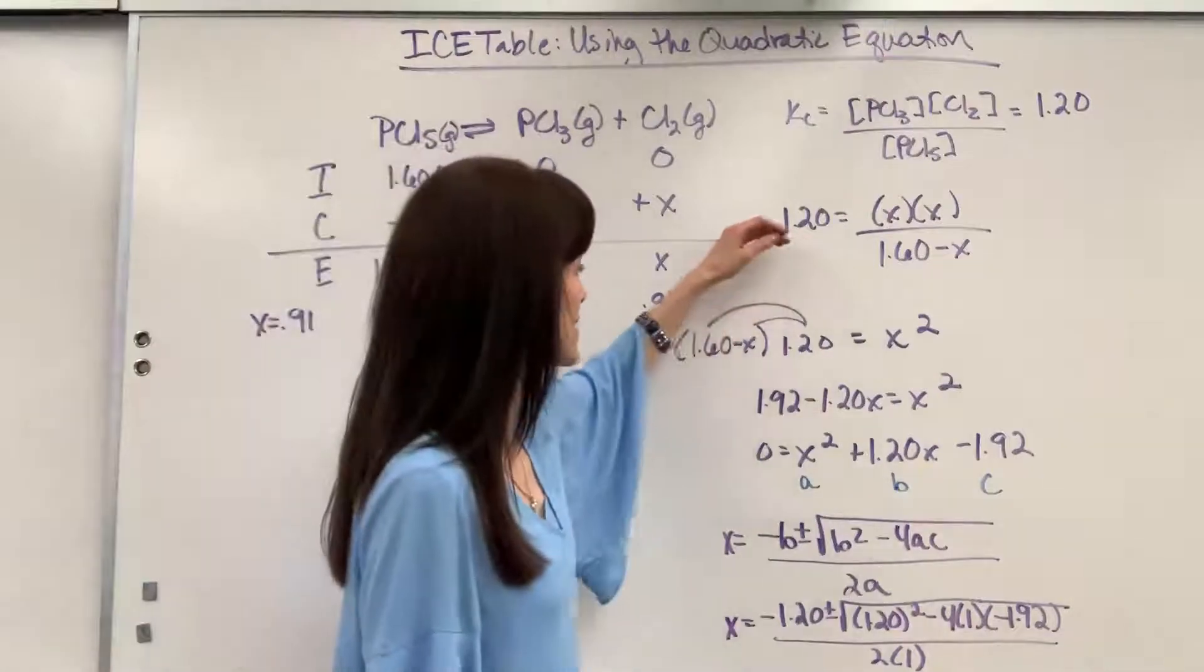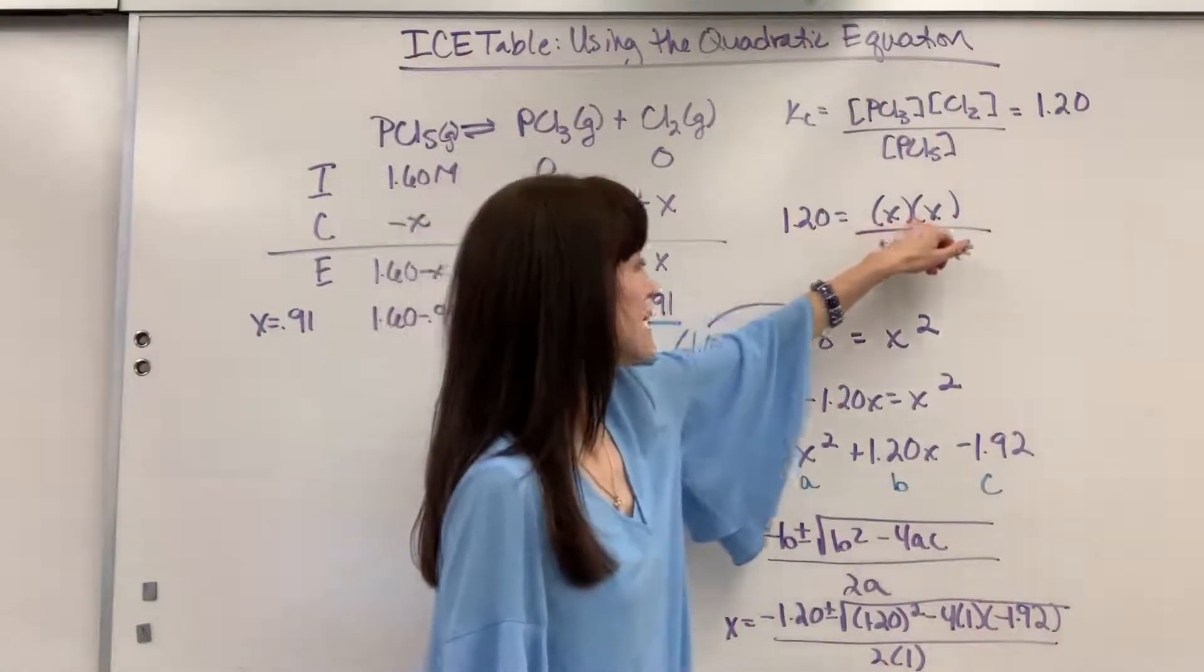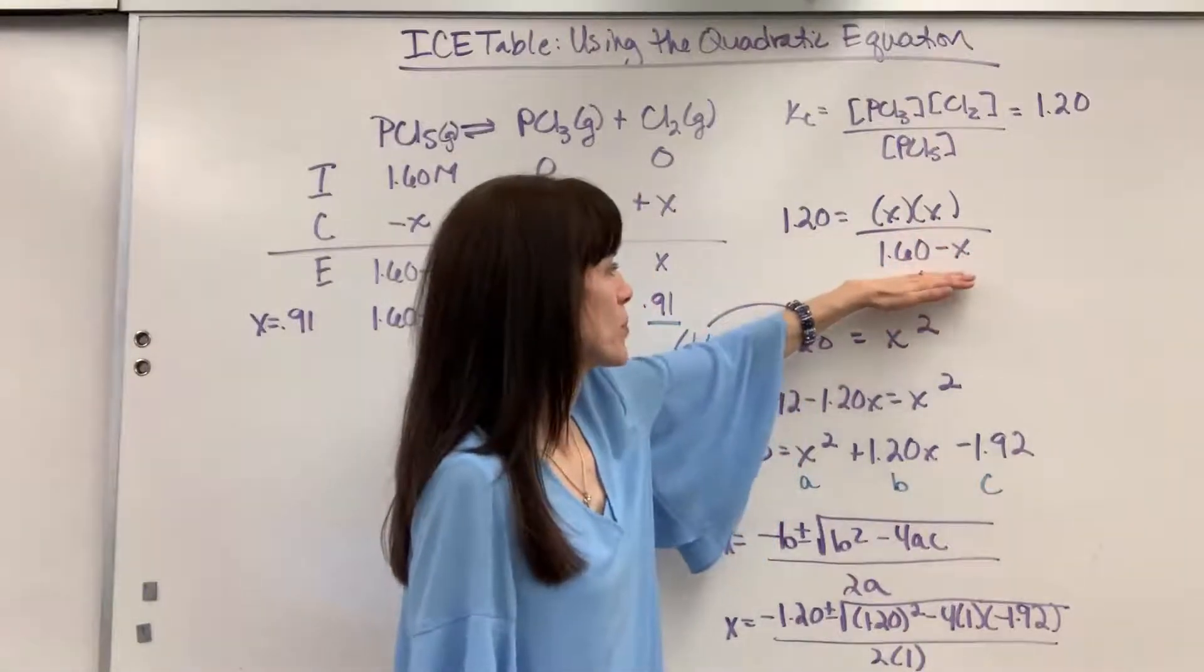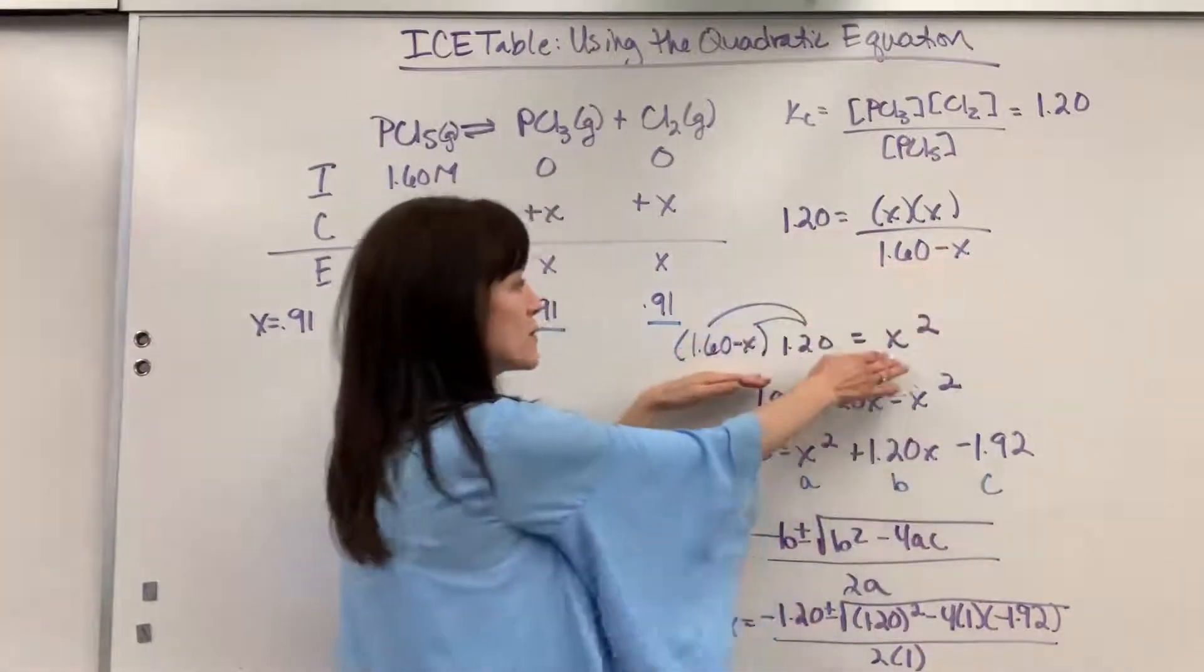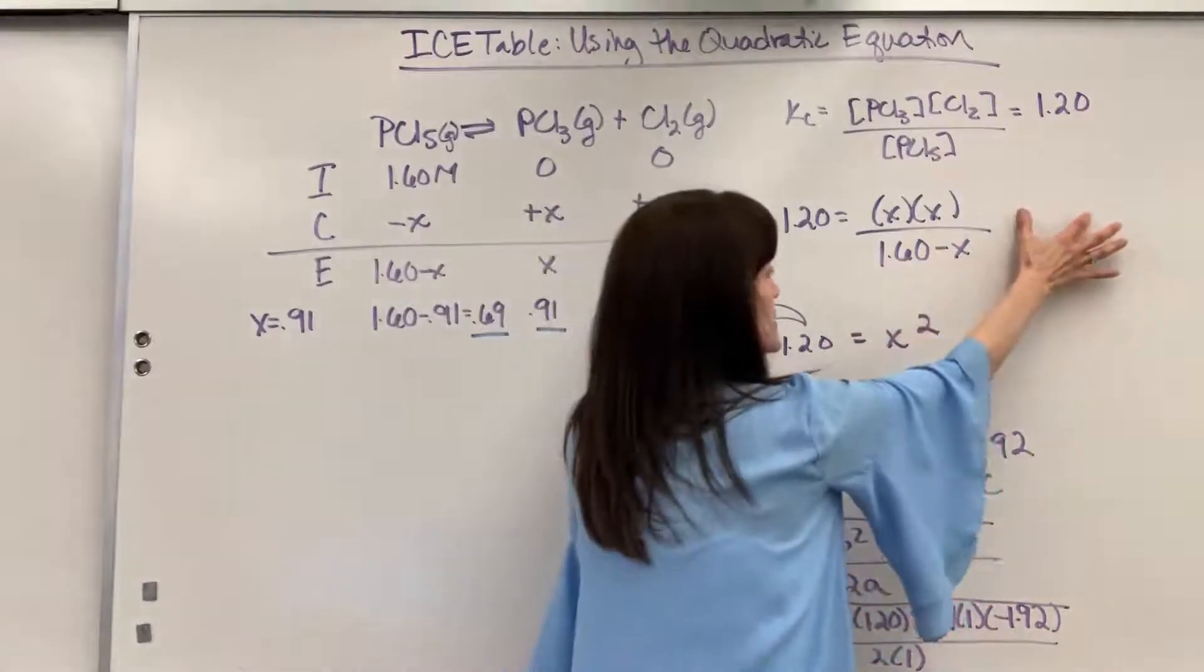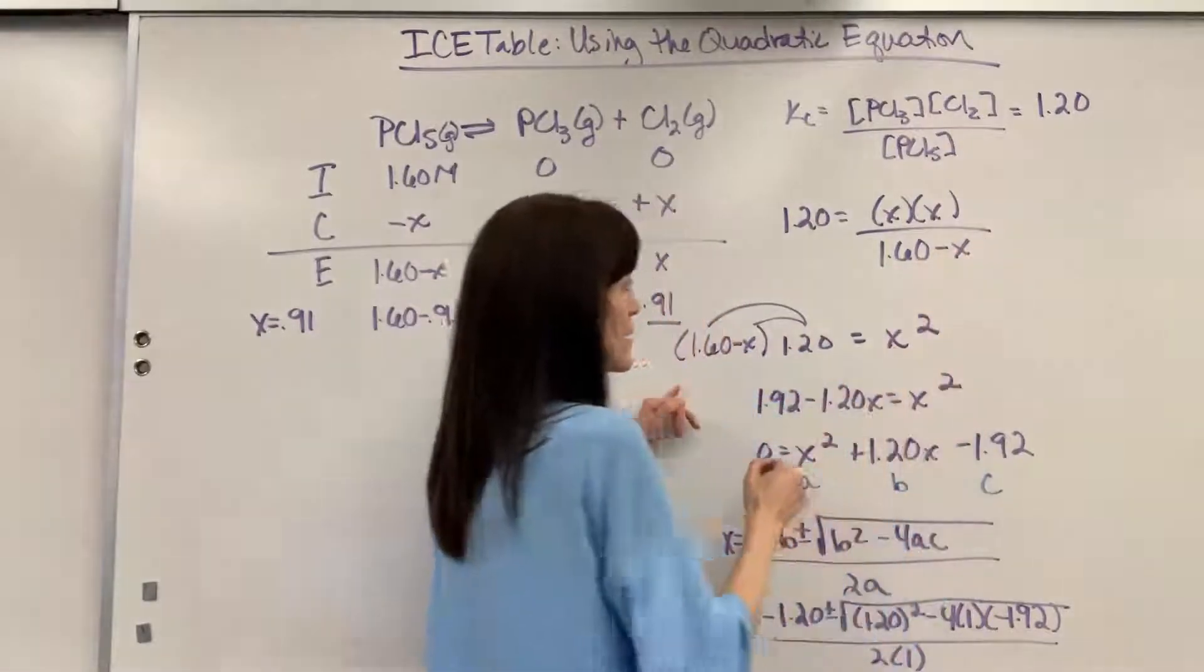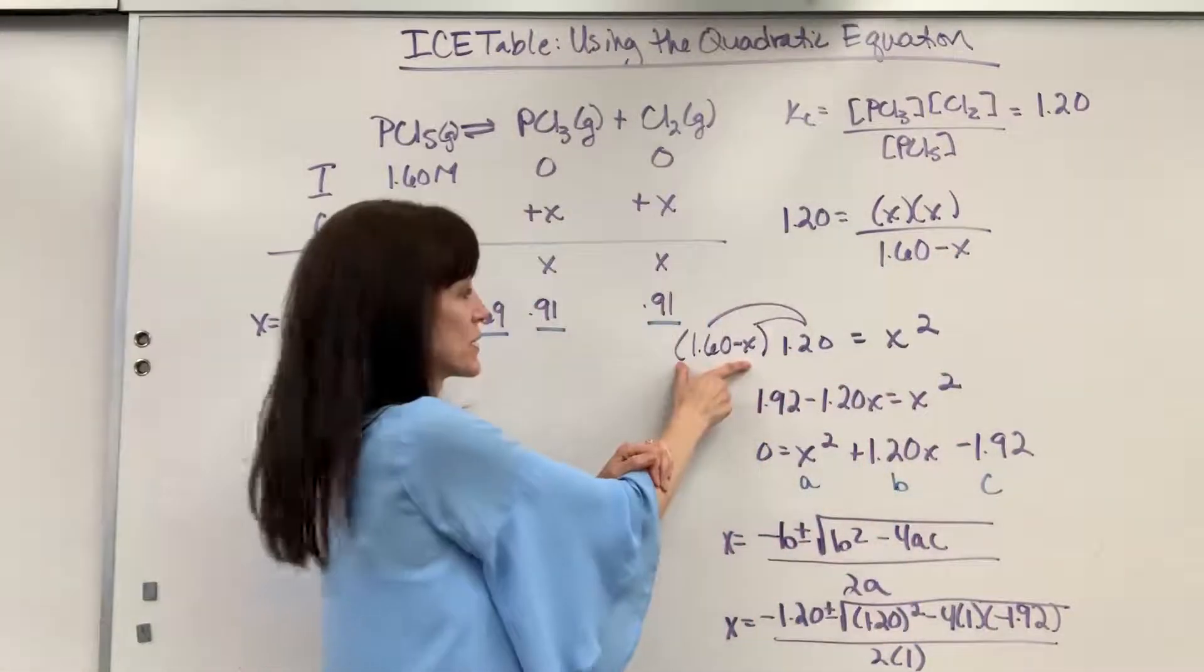So I multiplied this out. We would get the 1.2, and that's X squared, divided by the 1.6 minus X. Look what I did right here. I just multiplied both sides by 1.6 minus X, 1.6 minus X. So this would cancel, 1.6 minus X, and I have the 1.6 minus X over here.